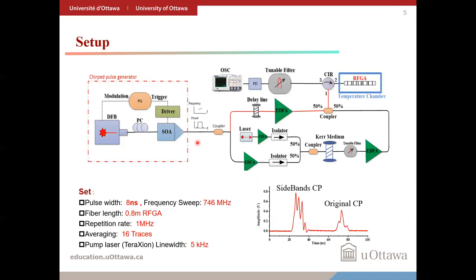This setup was used for generating chirped pulses, extending the chirping range, and using them to measure the temperature of a random fiber grating array. After being generated electronically, the chirped pulses are split into two branches. Unenhanced pulses are sent directly to the random fiber grating array and their Rayleigh trace is recorded. The other pulses are sent into a highly non-linear fiber along with a high-power CW pump. A tunable filter is used to extract particular sidebands to obtain pulses with an extended chirping range, which are subsequently used for measurements.